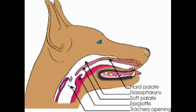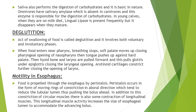At the same time, the hyoid bone and larynx are pulled forward, which pulls the glottis under the epiglottis, closing the laryngeal opening. Arytenoid cartilages constrict further, also closing the opening of the larynx. So first the elevation of soft palate closes the pharyngeal opening of nasopharynx, then the tongue pushes against the hard palate, and then the hyoid bone and larynx are pulled forward to close the glottis with the help of the epiglottis.